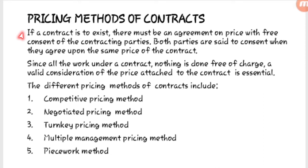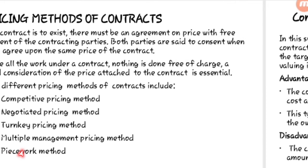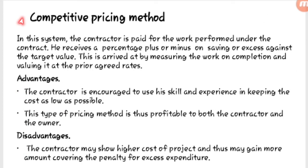Now let's talk about the pricing methods of contracts. If a contract is to exist, there must be an agreement on price with free consent of the contracting parties. Both parties give consent when they agree upon the same price, because nothing is free of charge. The pricing methods we have are: competitive pricing, negotiated pricing, turnkey, multiple management pricing, and piecework.